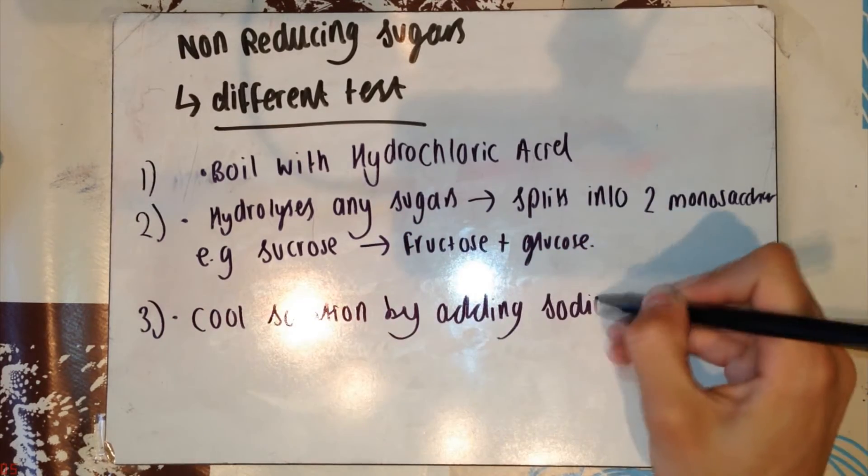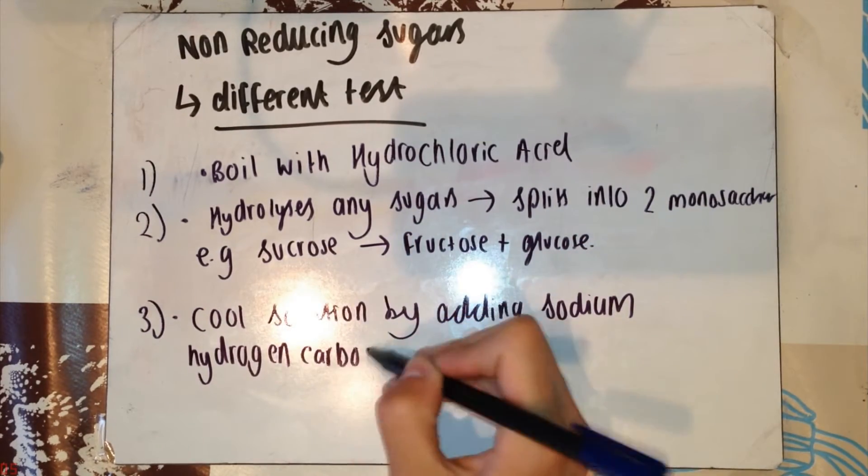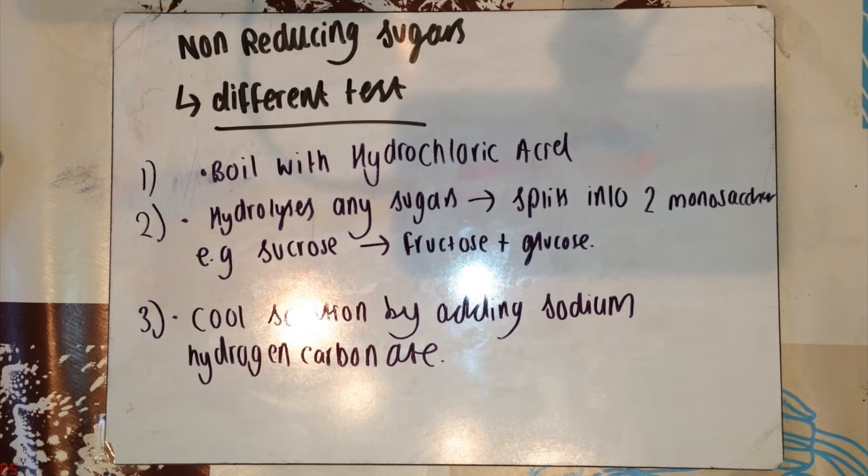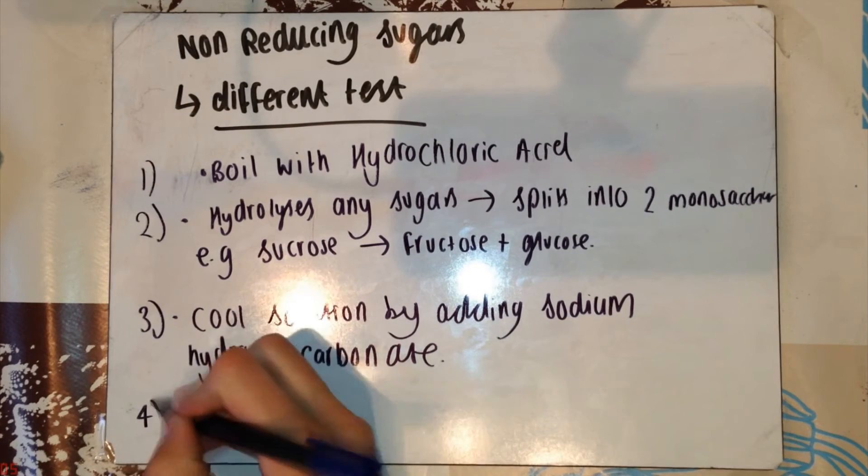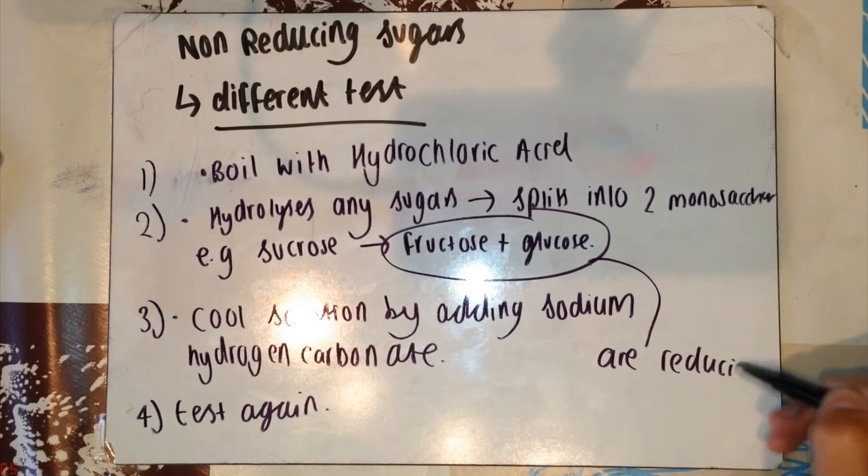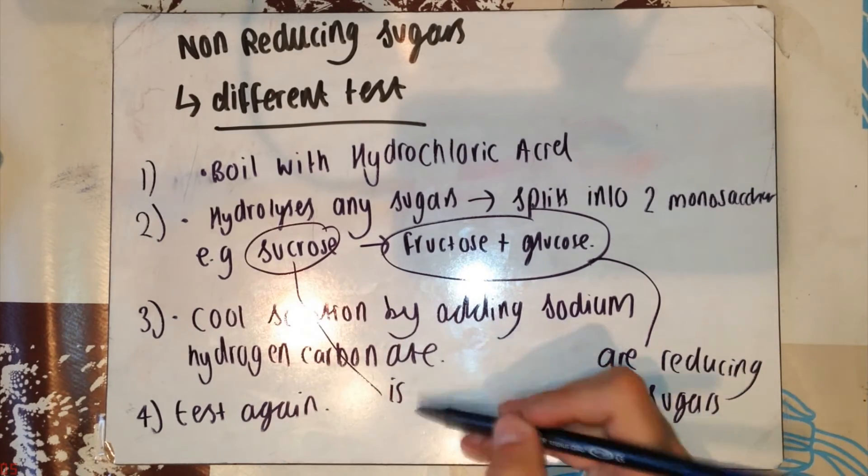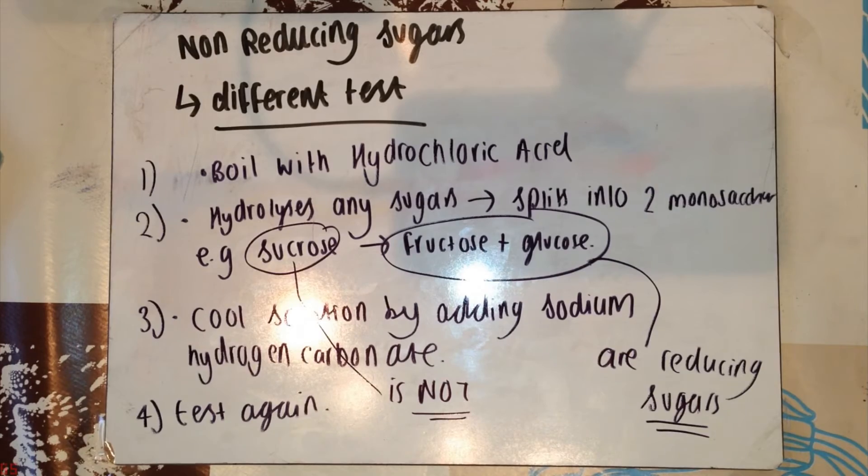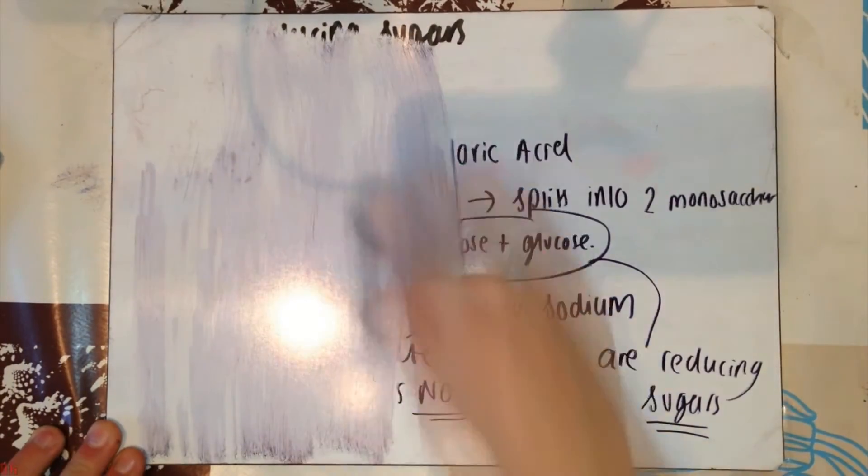You can then cool the solution and then add sodium hydrogen carbonate and alkaline solution. You can then repeat the test and it should come back positive. Remember though, the test will come back positive for reducing sugars, not because sucrose is there, but because fructose and glucose have been separated and they are both reducing sugars.